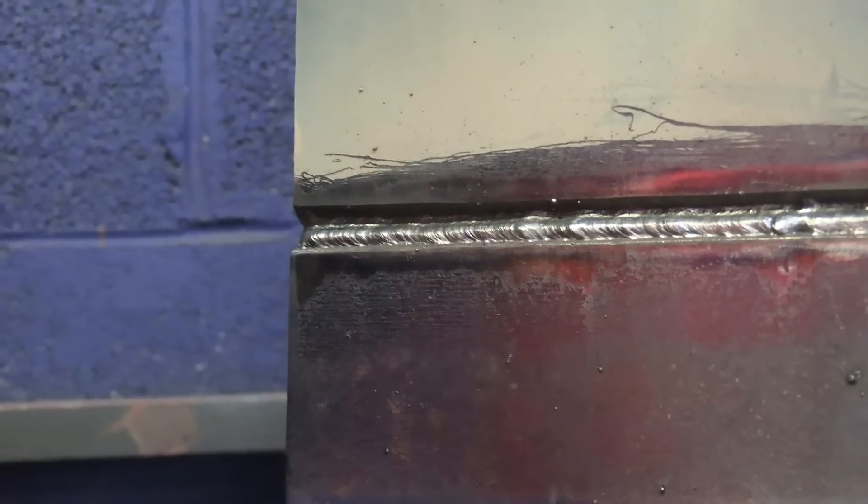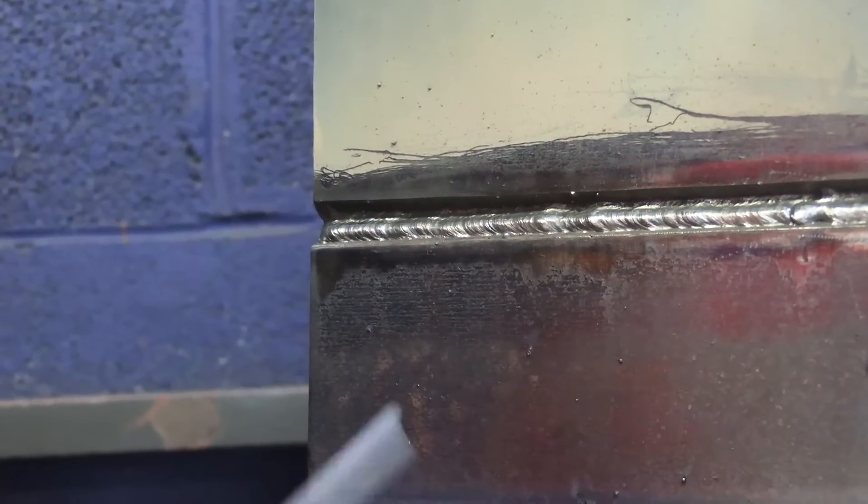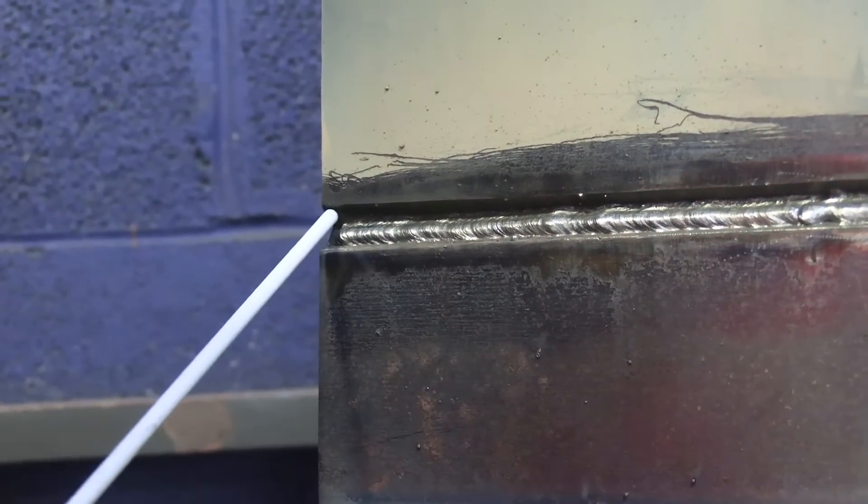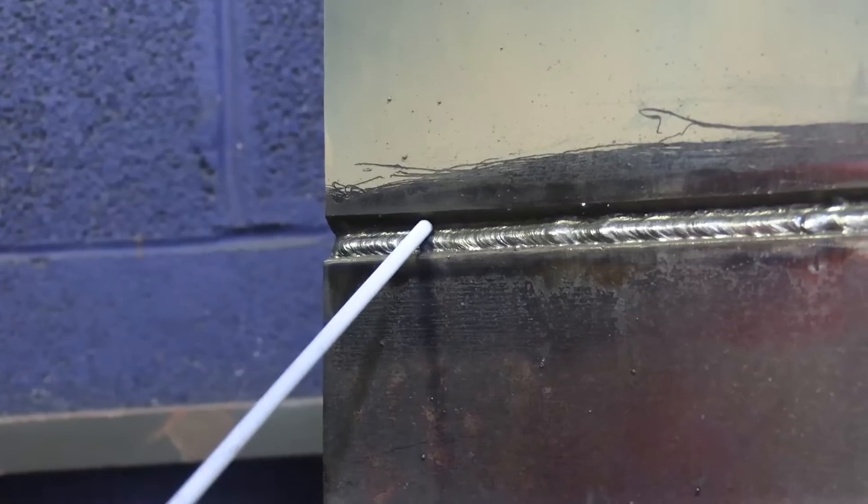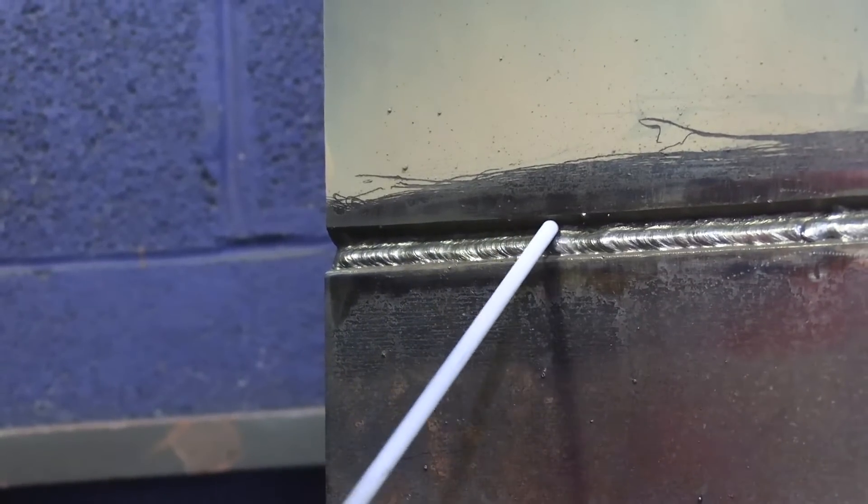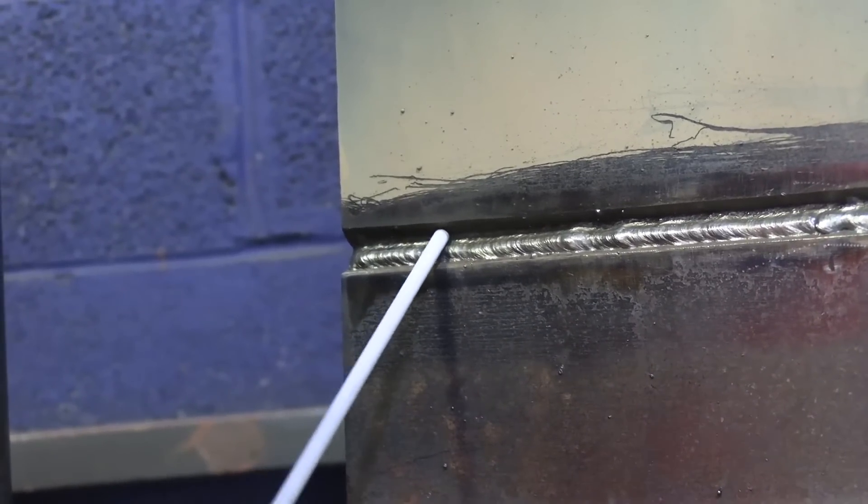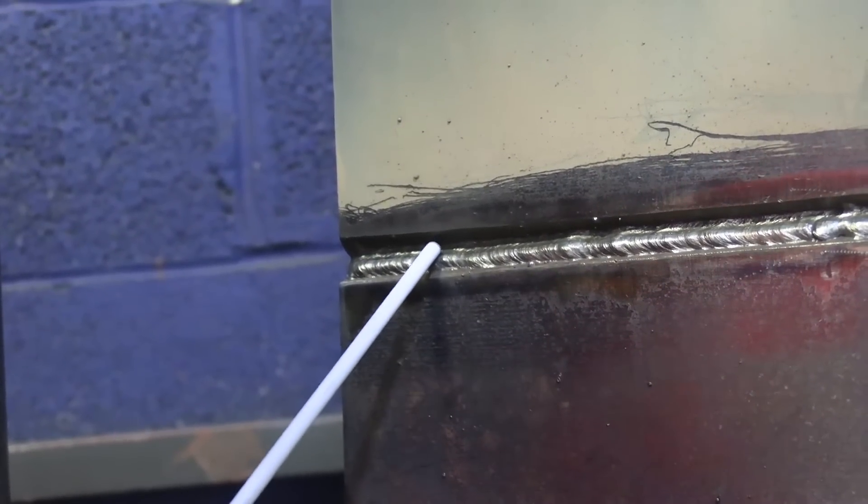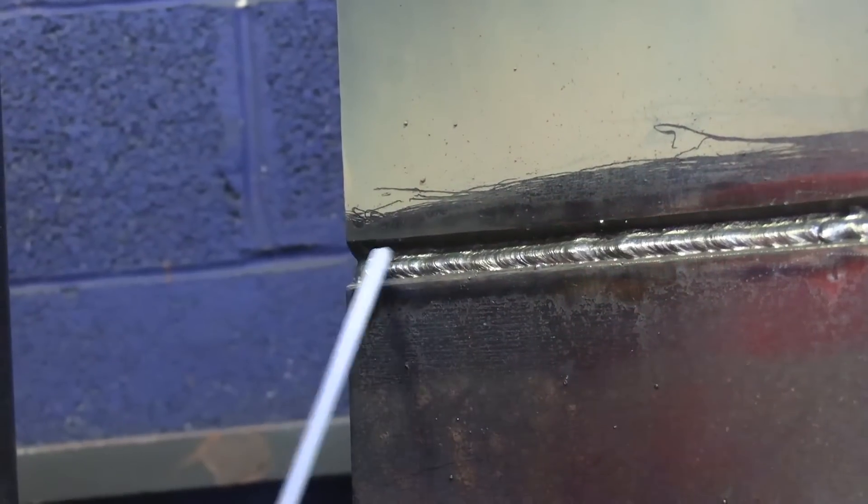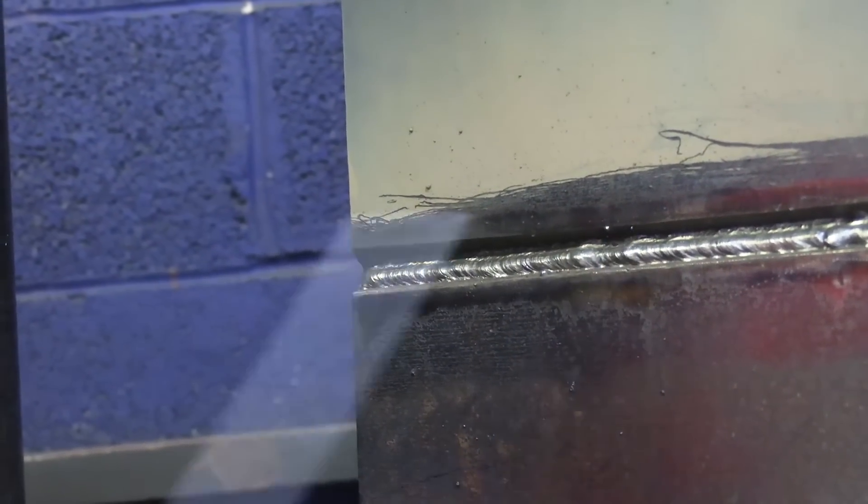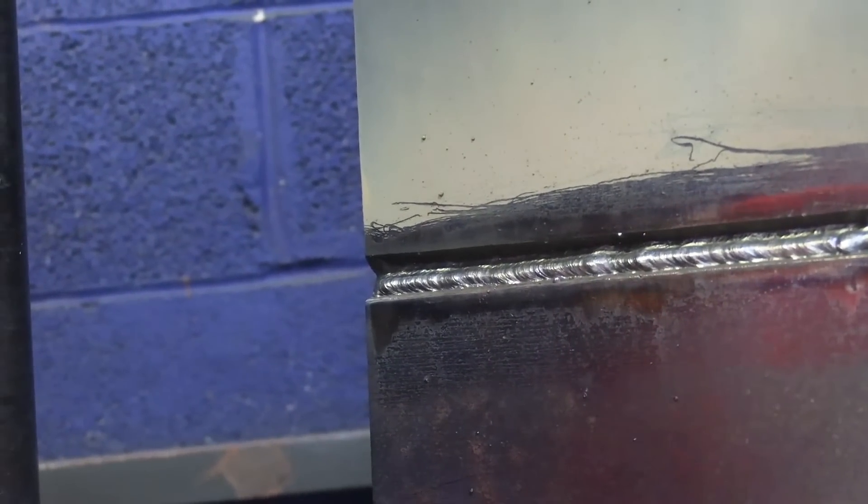So now that we've completed that pass right there, we're going to come right above that weld we just put in there. And we're shooting for this little crease right here. I'm going to have a little bit more of an upward angle on this. That way I can make sure I'm getting some weld material applied to that top. But I really want these two welds to overlap each other at least about 30-40%.